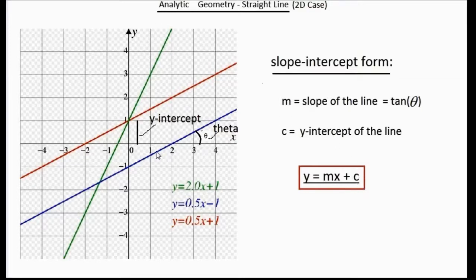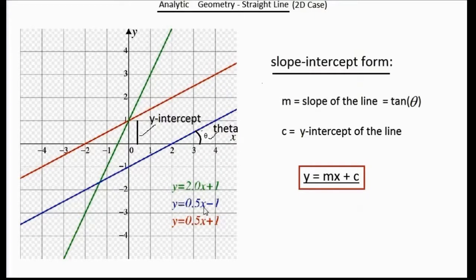As shown in this picture, the line with blue color is making an angle theta with the x-axis and its y-intercept is minus 1. The slope m of the line is computed as tan of the angle theta. The intercept here in this example is minus 1, so the equation of this line is y equal to 0.5x minus 1.